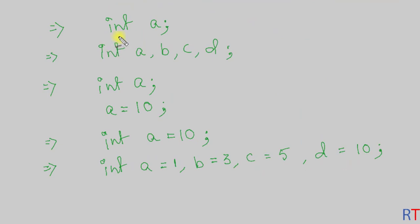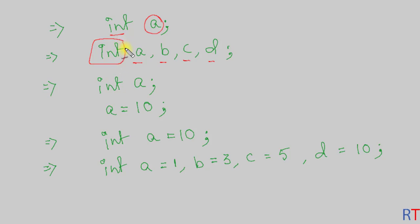This way we can also create double and wide character variables. To declare one variable, you have the data type followed by the name of the variable. We can also declare multiple variables on the same line — in that case, first you have the data type and then separate the multiple variables by using a comma.